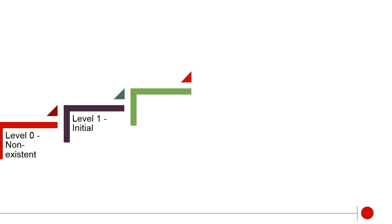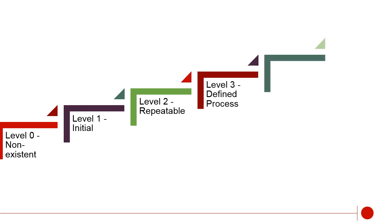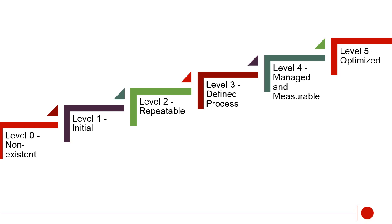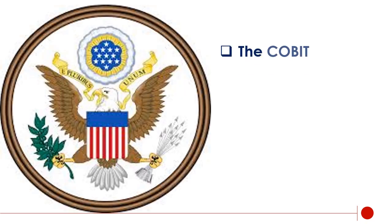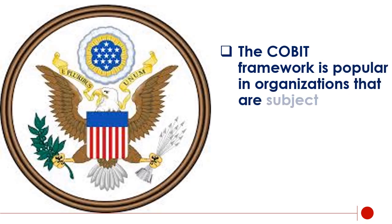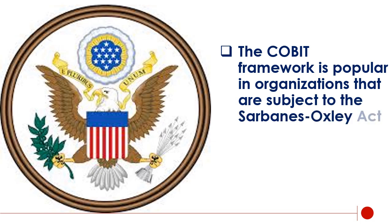Maturity models. COBIT maturity models help businesses assess the maturity of their organization, understand how the process will grow with the organization, and identify any potential problems that might arise down the line. The COBIT framework is popular in organizations that are subject to the Sarbanes-Oxley Act.